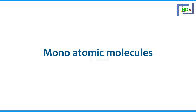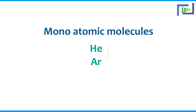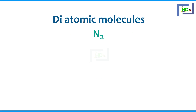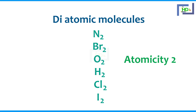Monoatomic molecules mean some elements exist as single stable atoms and are made up of monoatomic molecules. Examples are helium, argon, and neon, which are inert gases — they are stable with one atom and will not combine with others. Nitrogen, bromine, oxygen, hydrogen, chlorine, and iodine are diatomic molecules — they contain two atoms, so their atomicity is two.